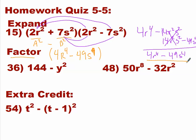When you factor a difference of squares, what will the factored form basically look like? It will have parentheses — two pairs of parentheses. What signs go inside these parentheses? Plus and minus. So one parenthesis is going to be positive and the other is going to be negative.